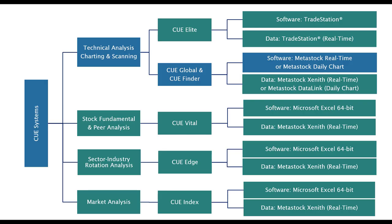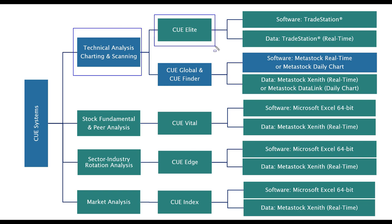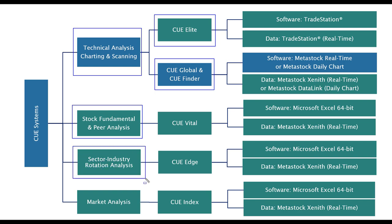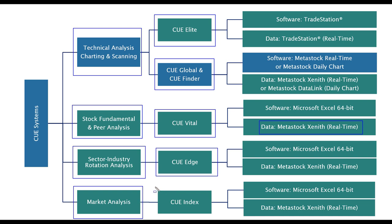For technical analysis I will use either Q Elite on TradeStation or Q Global in conjunction with Q Finder on Metastock. For the rest of the 360 degrees analysis — stock fundamental and peer analysis, sector and industry rotation analysis, and market analysis — I will use systems based on Metastock Zenith: Q Vital for fundamental analysis, Q H for sector and industry rotation analysis, and Q Index for sector, industry, and market level index analysis.